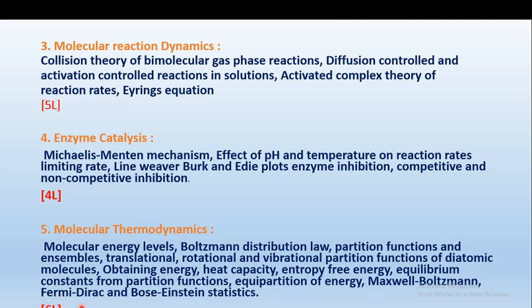This was all about the syllabus of section first physical chemistry, which consists of four chapters, and section second of physical chemistry — chemical kinetics — which covers five chapters. Section second is all about equations and derivations, while section first covers the theoretical part. This was the syllabus for your physical chemistry course.